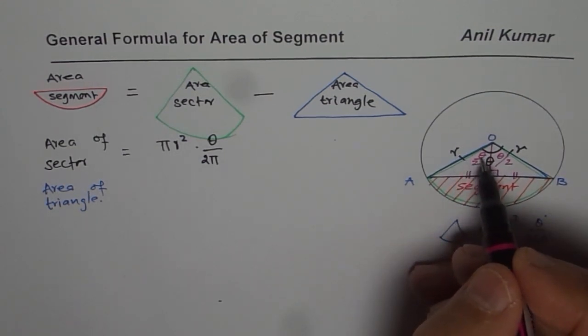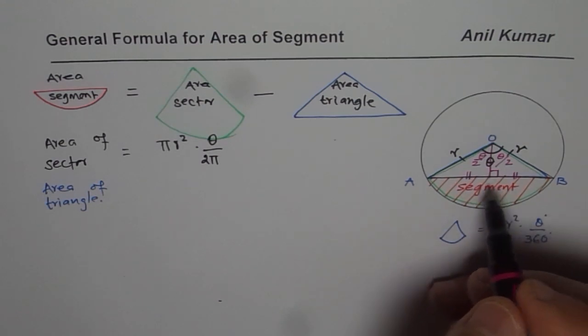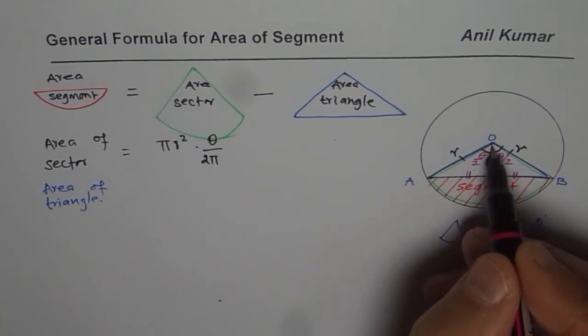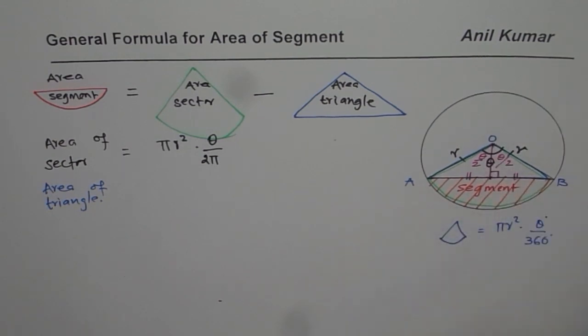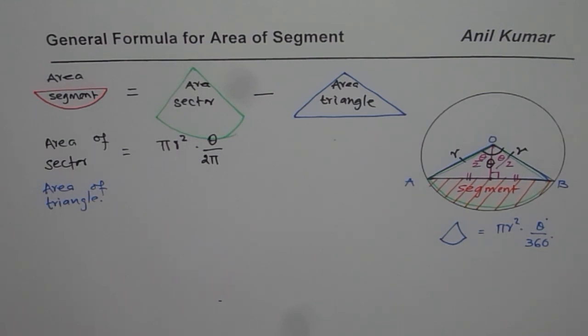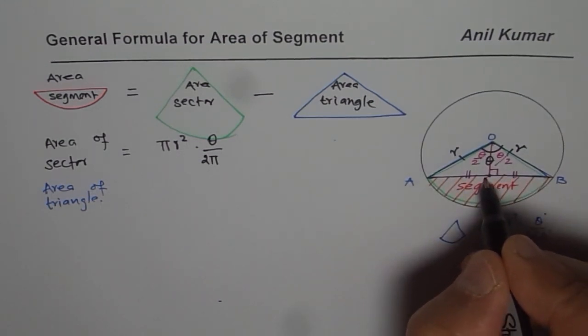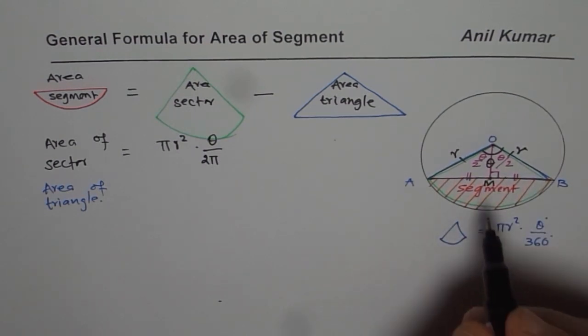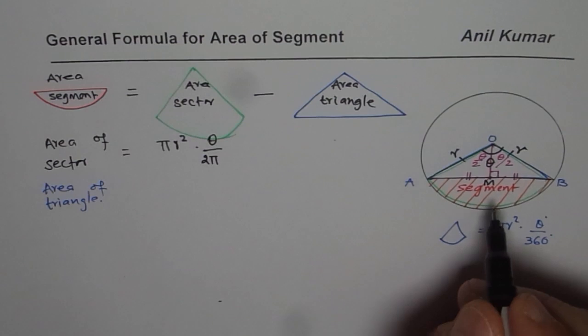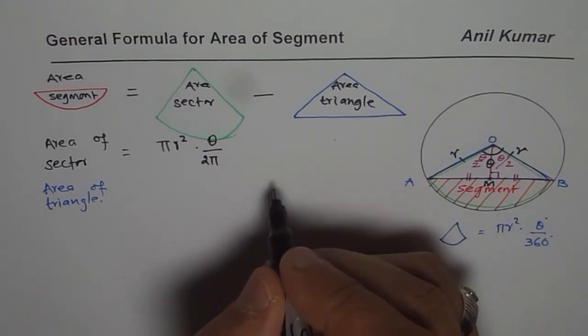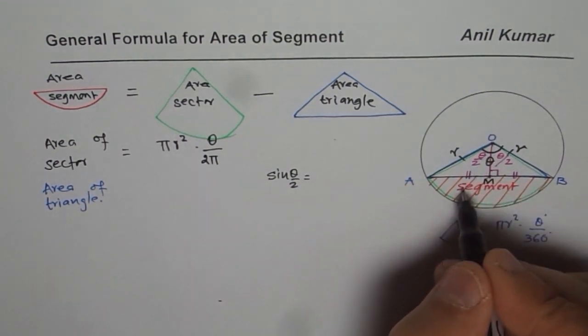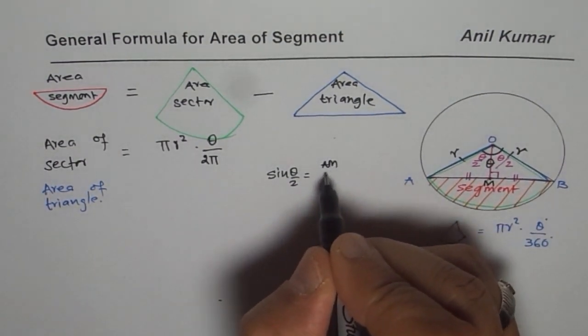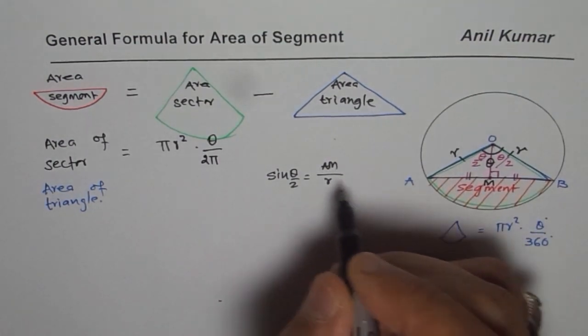Once you know this theta by 2 angle, in that case, you can write opposite side and adjacent sides. Adjacent side is your height in terms of theta and the angle. And you can find all other points. So let's call this point as the midpoint m. So from here, what we can say is sine of theta by 2 will be equals to am over r.